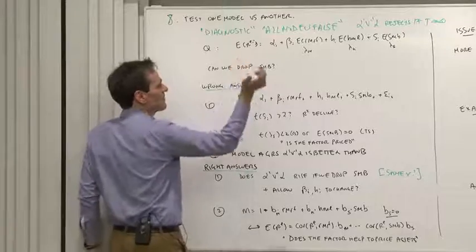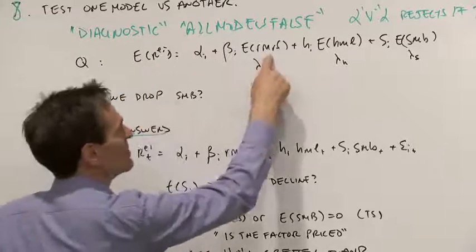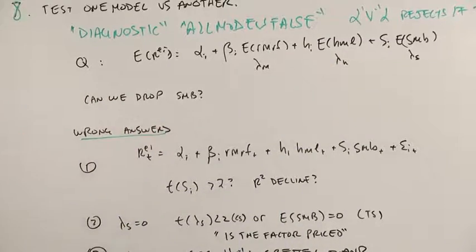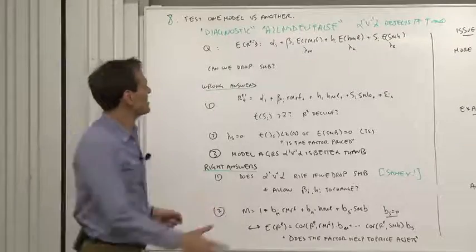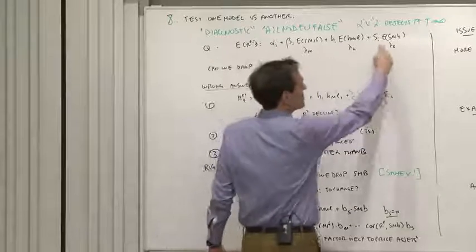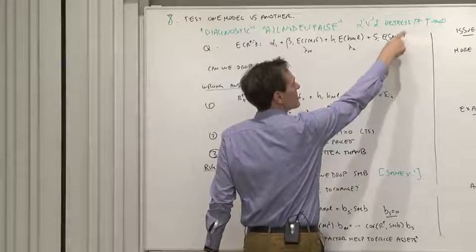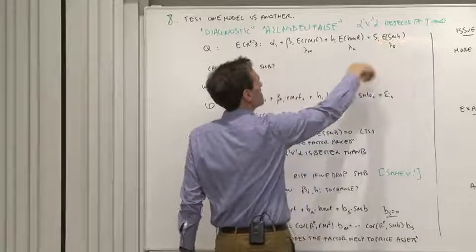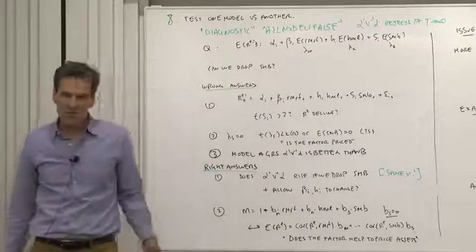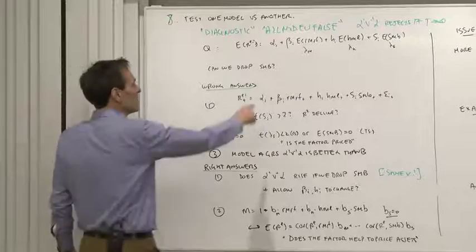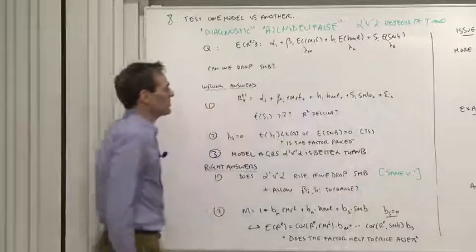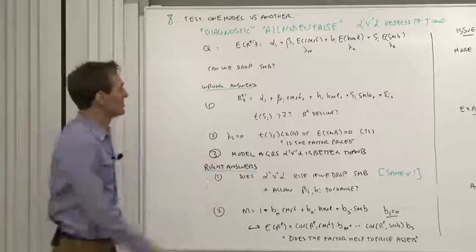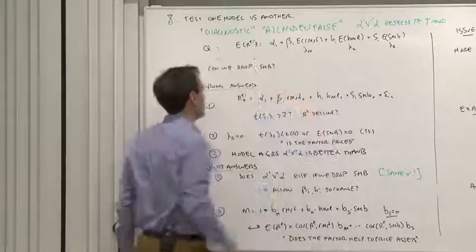Example would be the Fama-French three-factor model. Expected returns are the market return, the HML, and the SMB. And you might want to ask the question, do we really need all three of these factors? In particular, if you look at the data, since small stocks are well-priced, they have pretty big alphas, maybe we can drop the SMB in favor of just the two-factor model and the different betas on the market will account for the small stocks rather than SMB. How do we go after that question? Can we drop SMB or not?